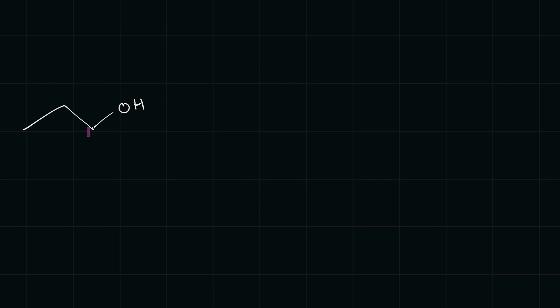Here we have a primary alcohol on this alkane, and what we want to do is try to convert it to either a ketone or an aldehyde. Now, since it's a primary alcohol, can we change it into a ketone? Well, sadly no. If we try to oxidize this alcohol it will either turn into an aldehyde or a carboxylic acid. To change it into an aldehyde we have to oxidize it, but if you provide too strong of an oxidizing agent you just create a carboxylic acid, and so we don't want to do that.